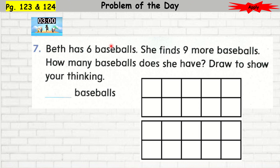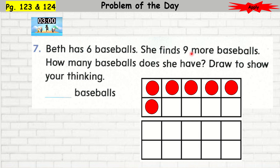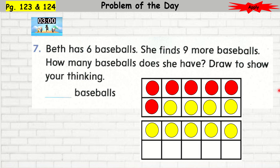Question 7: Beth has 6 baseballs. She finds 9 more baseballs. How many baseballs does she have? Draw to show your thinking. I'm going to use the 10-frame to help me draw. I'm going to draw 6 first: 1, 2, 3, 4, 5, 6. And then 9 more: 1, 2, 3, 4, 5, 6, 7, 8, 9. How many baseballs do I have? I have 10 and 5. So that would be 15.